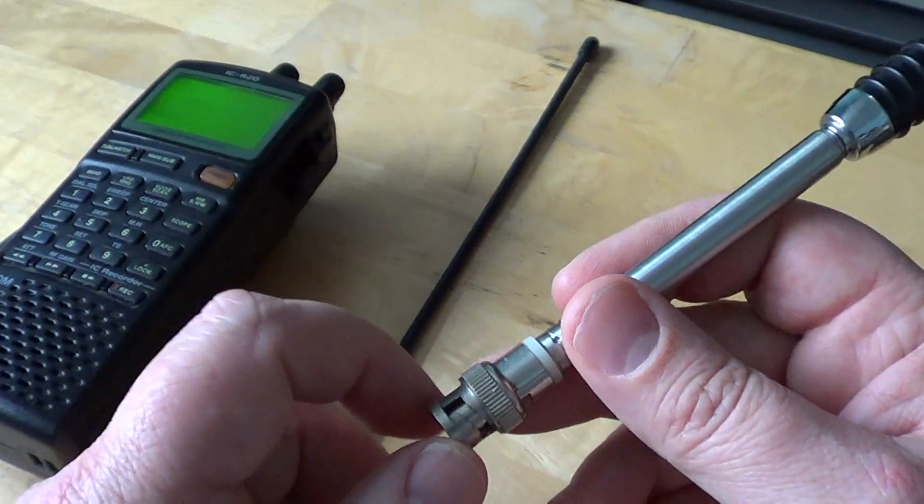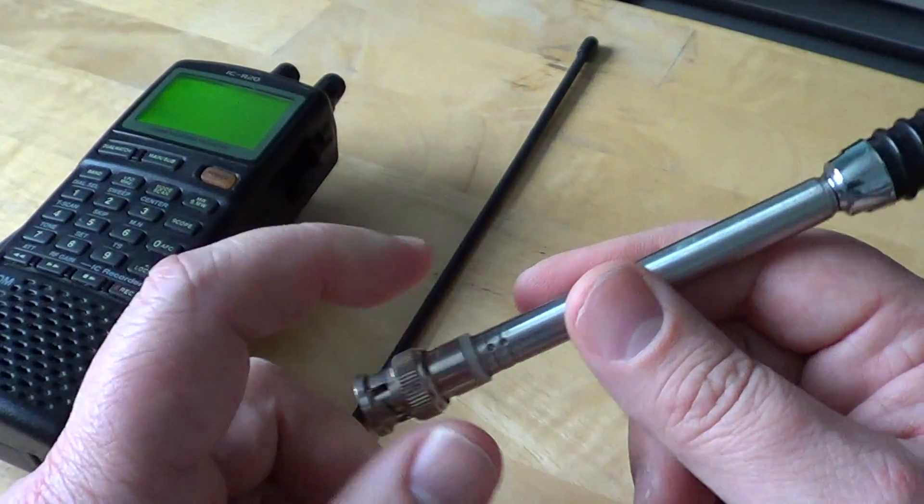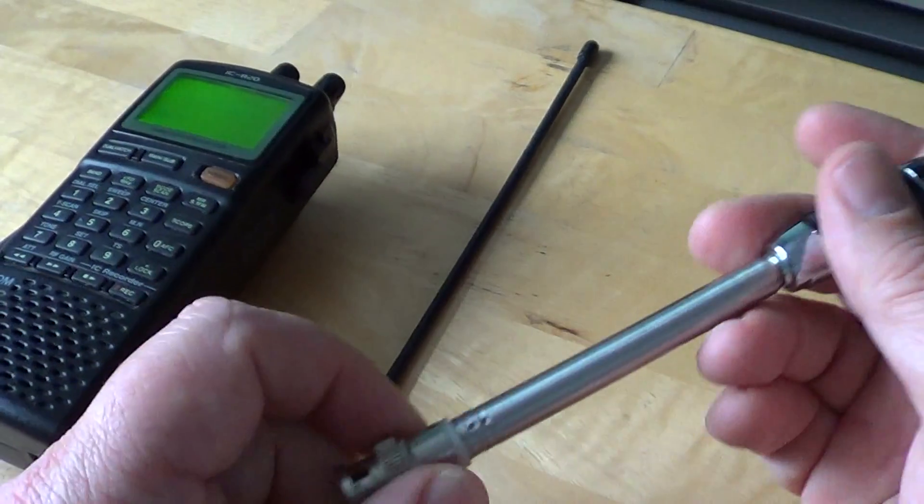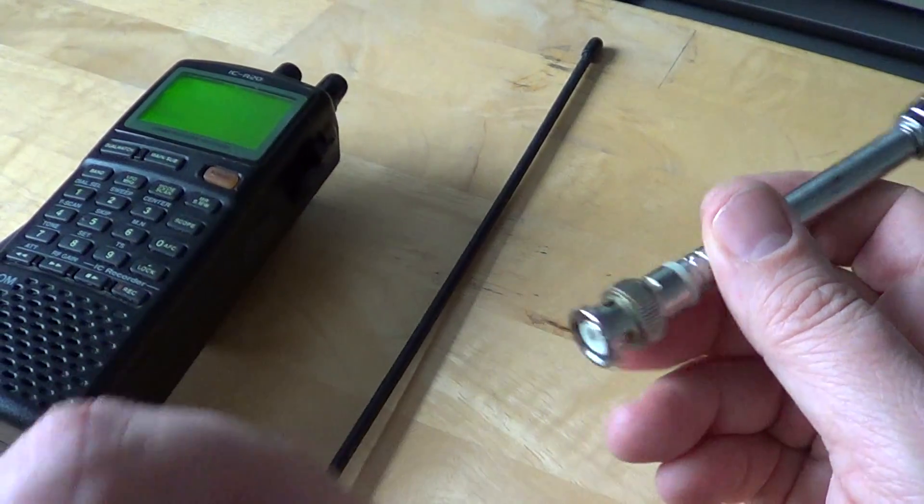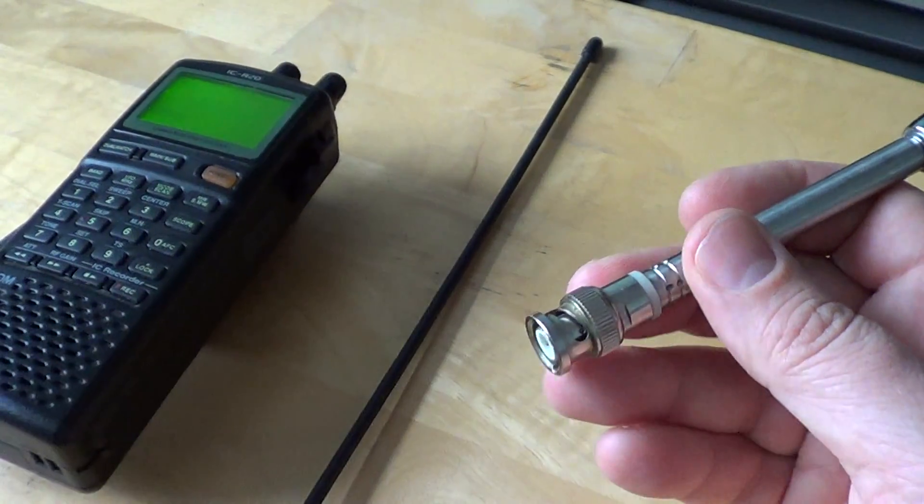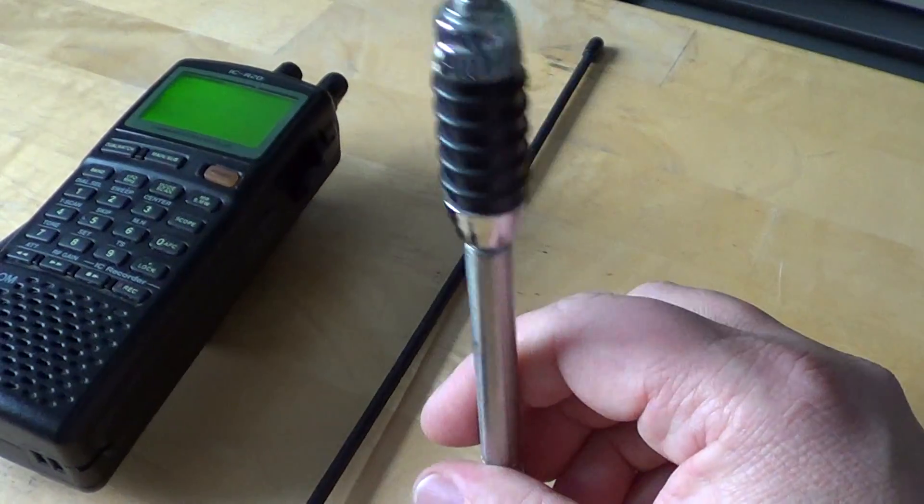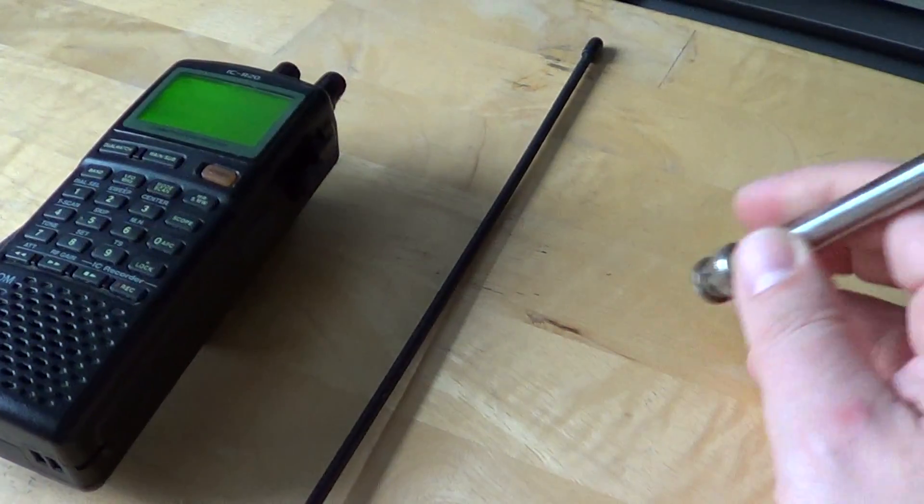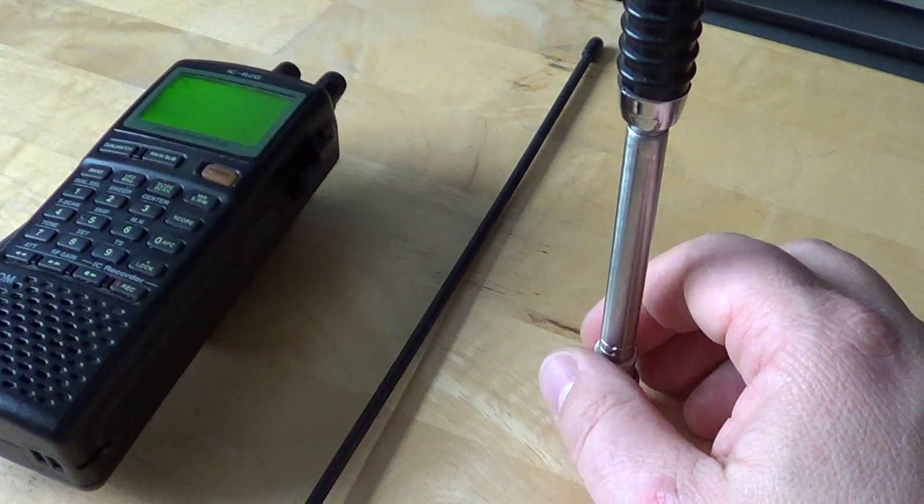Because if you add an adapter, it does lower the signal. The more adapters you put after an antenna, the less signal will get through to the radio because of the connection between each section.